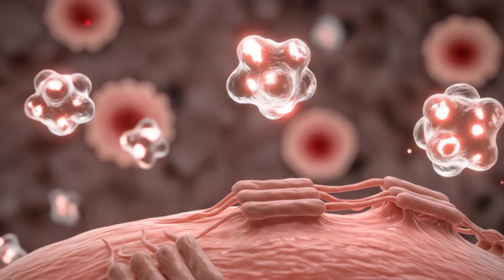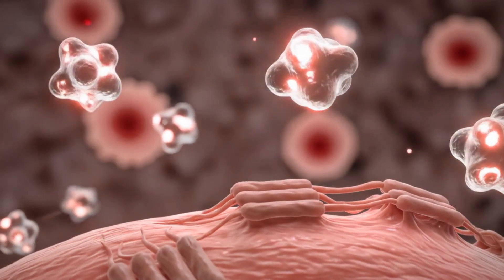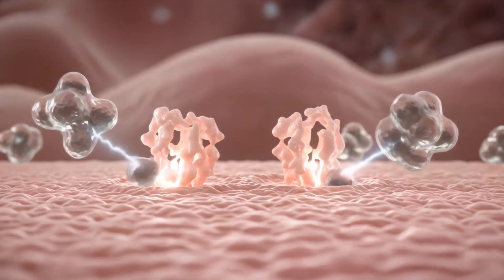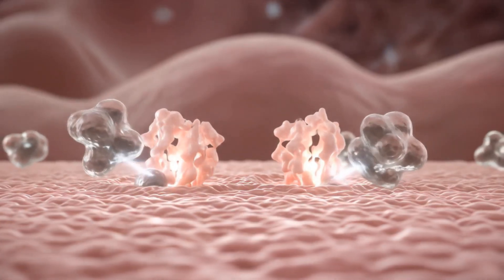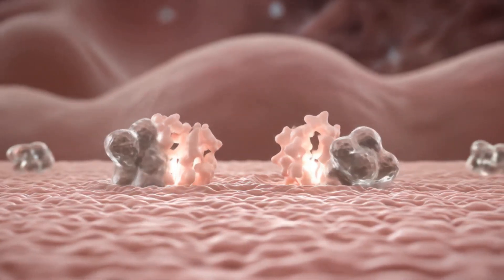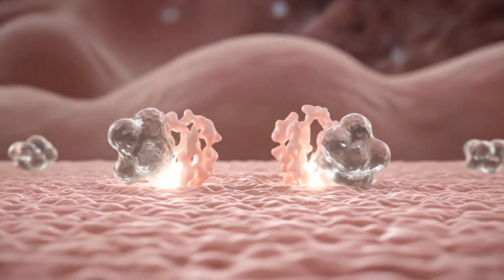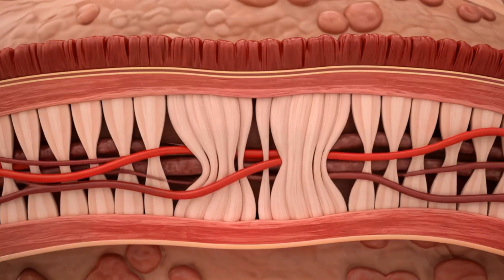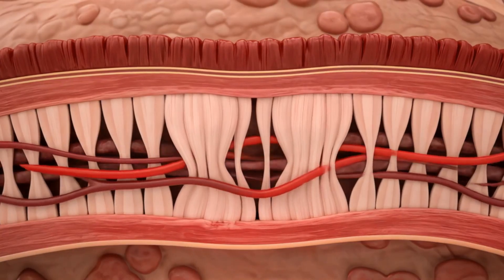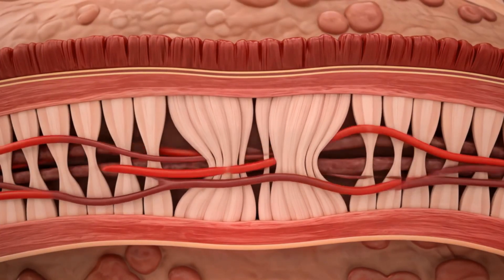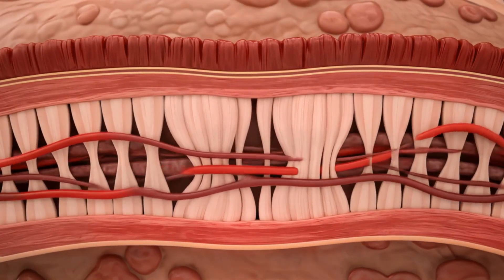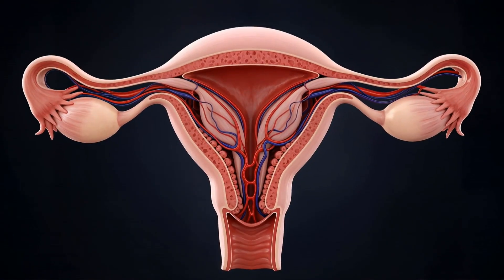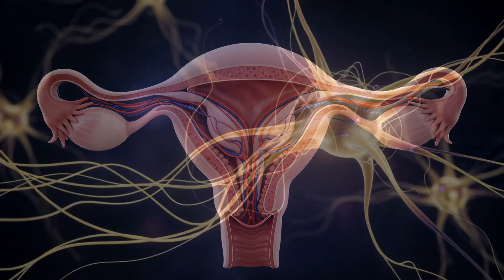Prostaglandins, particularly PGF2-alpha and PGE2, stimulate the myometrium to contract, helping expel the shedding endometrial tissue. These contractions compress blood vessels, reducing oxygen flow to the uterine tissue.